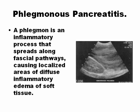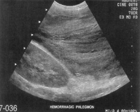Phlegmon is a diffuse inflammation of the soft tissue. Phlegmonous pancreatitis is characterized by inflammation around all the connective tissue that surrounds the pancreas — a diffuse inflammatory edema of soft tissue around the pancreas, created by pancreatitis. This is one ultrasound of a phlegmon. You can see only the edematous tissue and the kidney, but you cannot see the pancreas in this picture.